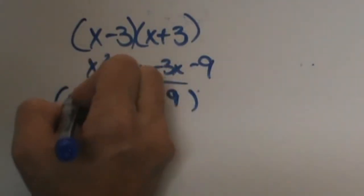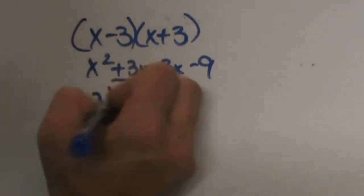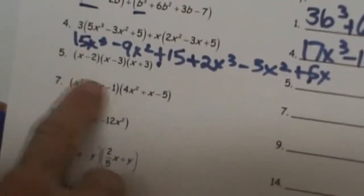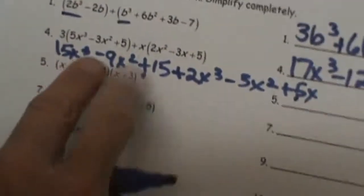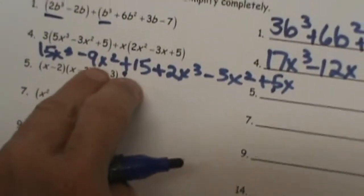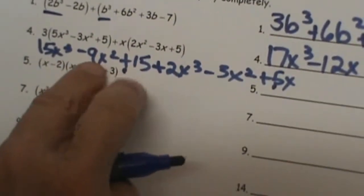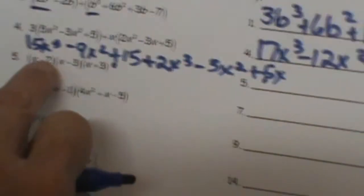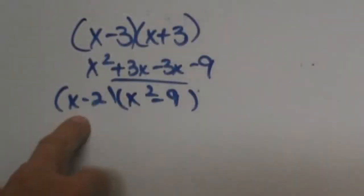Let's just bring down that x minus 2 right here that we need to multiply by. We multiply these two first, get our difference of squares, and then bring down x minus 2.